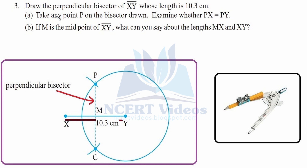Take a point P on the bisector drawn. Join PX and PY. Now use the divider to compare the distances — the divider is used to compare, not measure, distances. You will find that both distances PX and PY are equal.